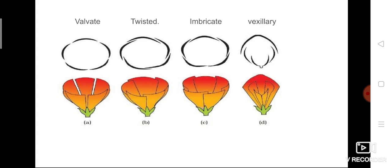The last type is vexillary estivation, seen in flowers with five petals. Some petals are larger and some are smaller. The larger petals are arranged outside and enclose the smaller petals. This type of arrangement, where smaller petals are enclosed by larger petals, is called vexillary estivation.